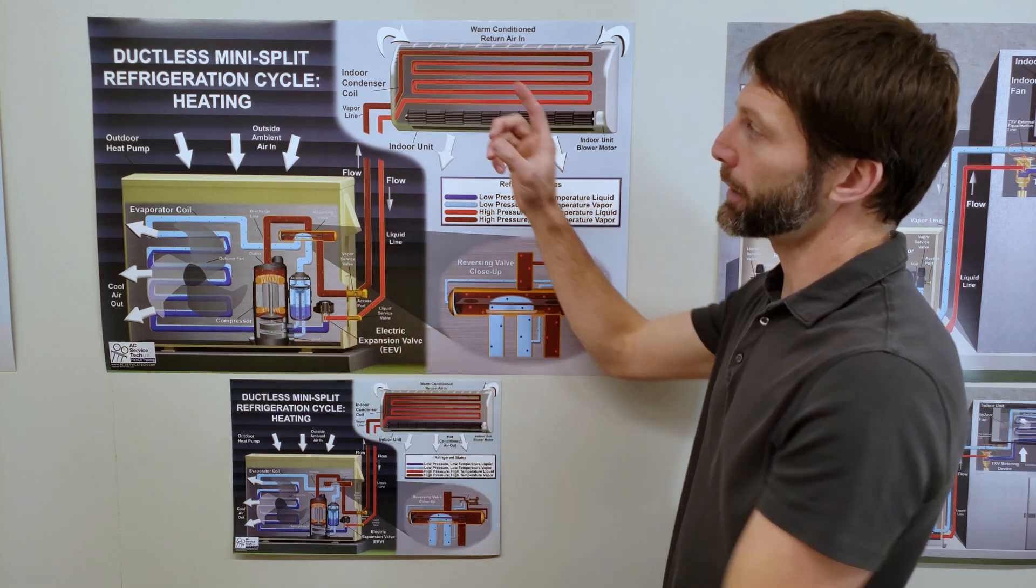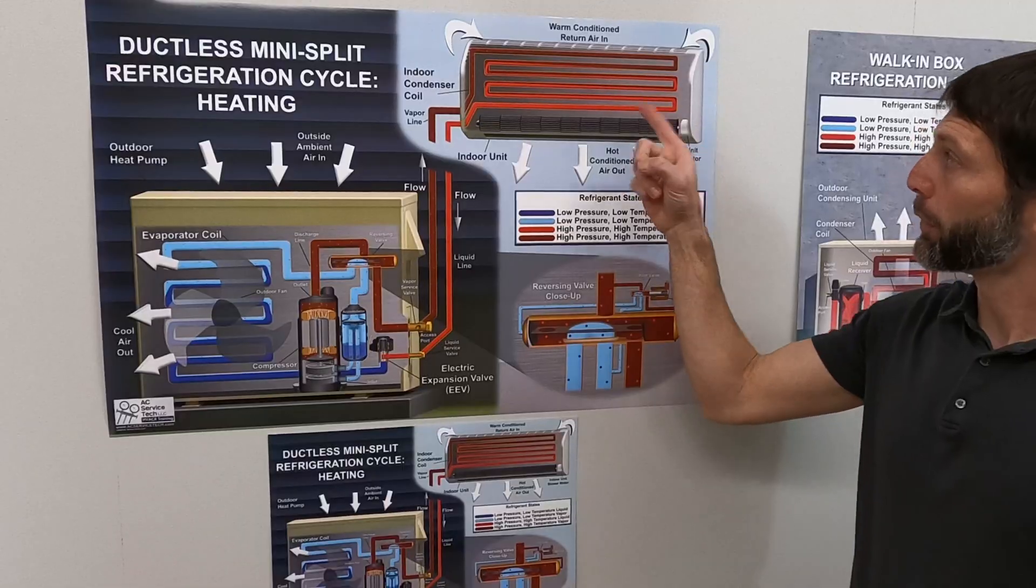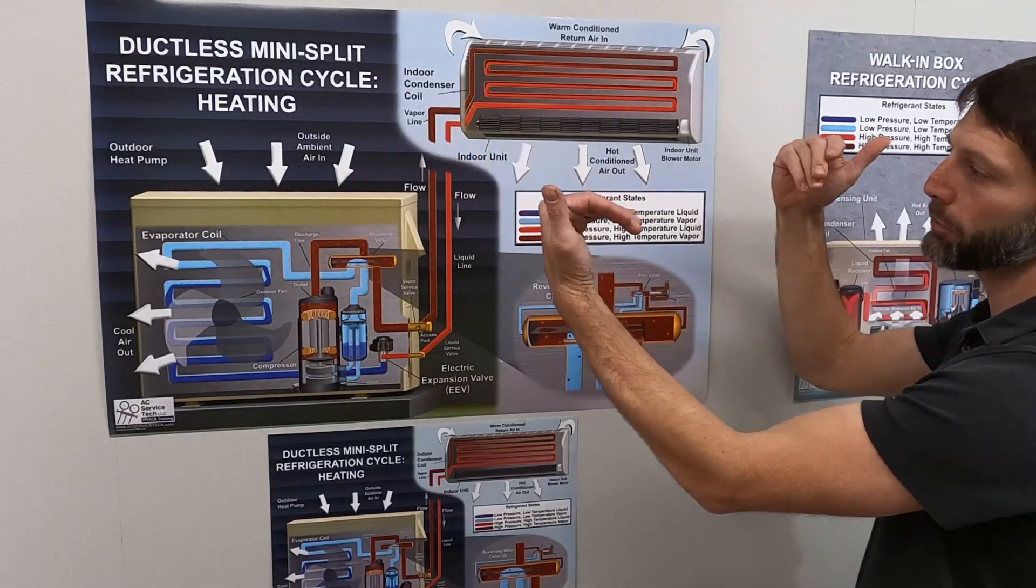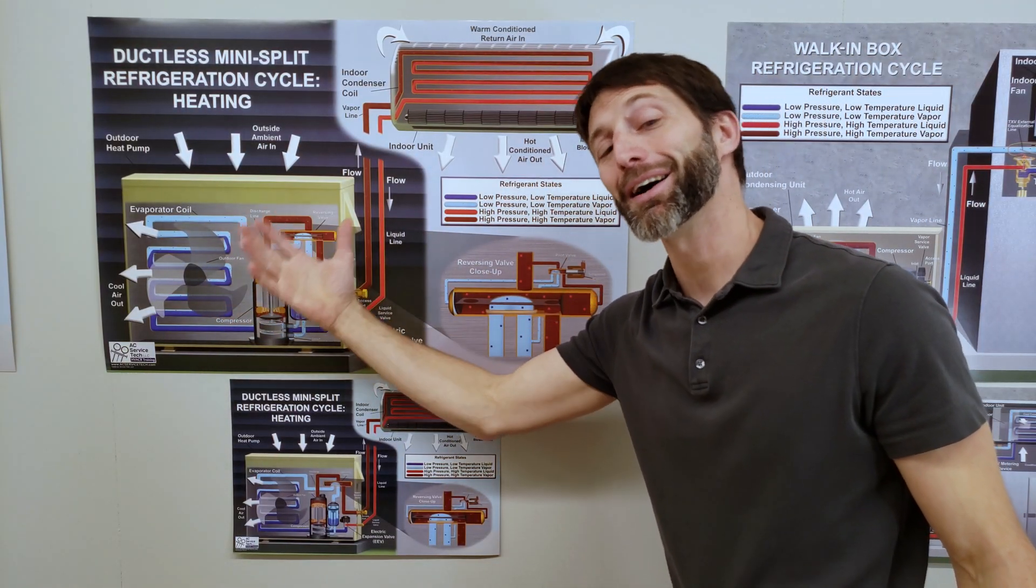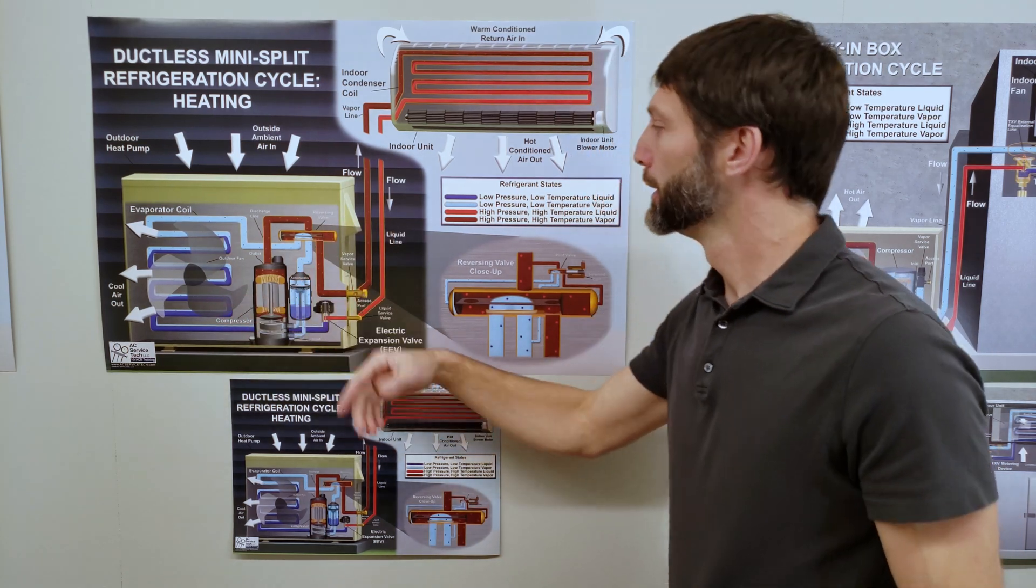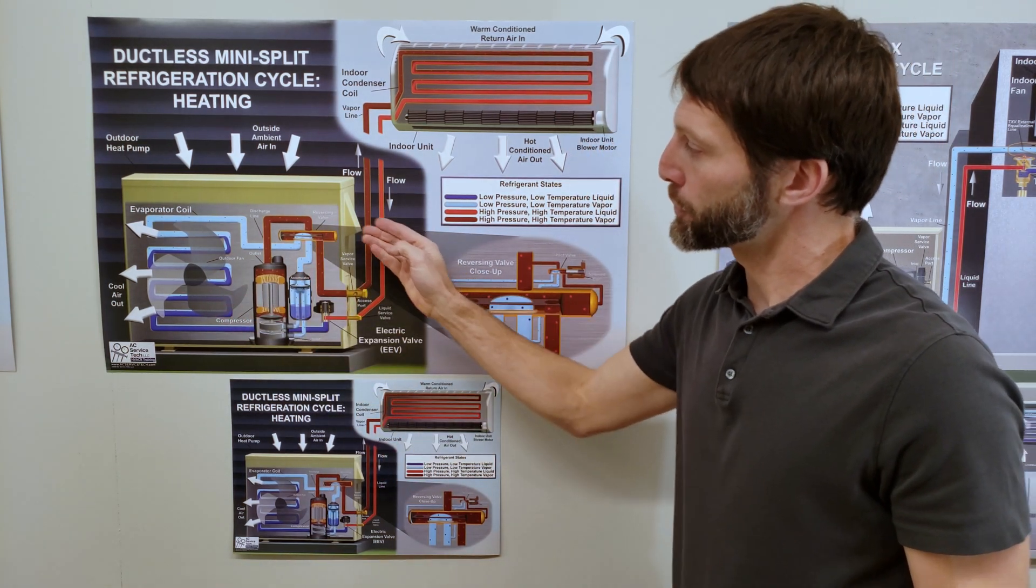Here you have your mini split in heating mode. Right here you are rejecting the heat from the refrigerant into the indoor air. Over here you are absorbing your heat from the outside air even though it's low in temperature. You have your reversing valve shifted over here.